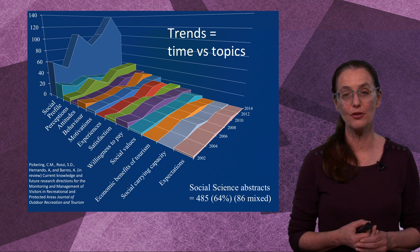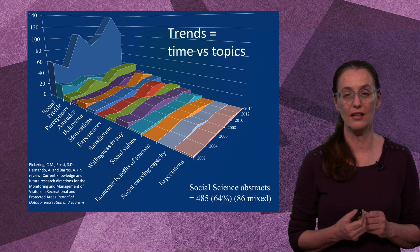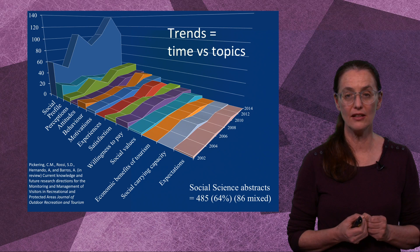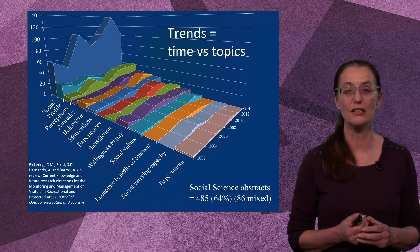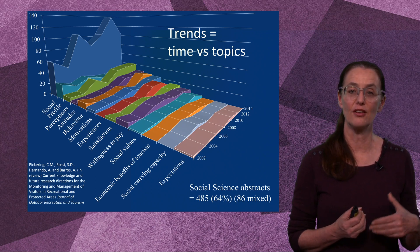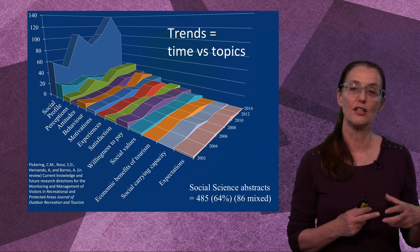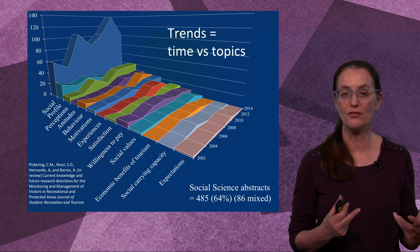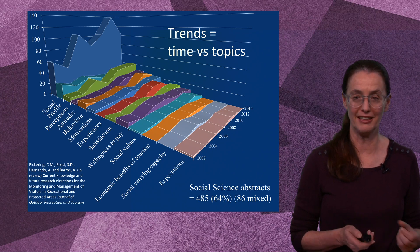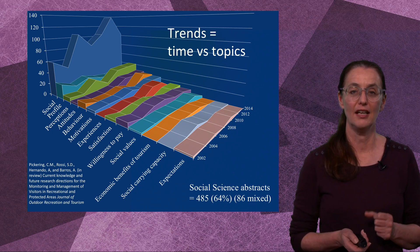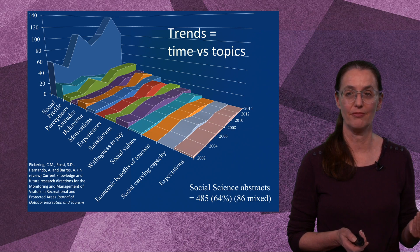Here's a really simple graph using the default style in Excel — this is looking at conference abstracts and those themes over time. It's a really neat way to display that sort of table much more interactively. But these are still one variable against another.